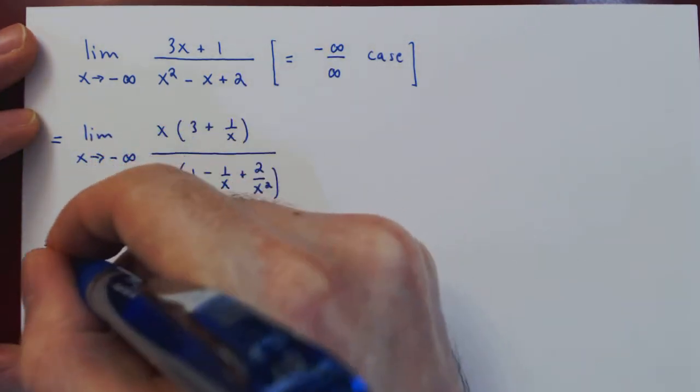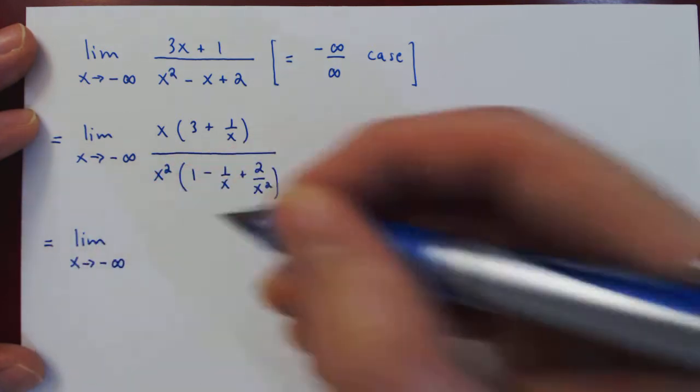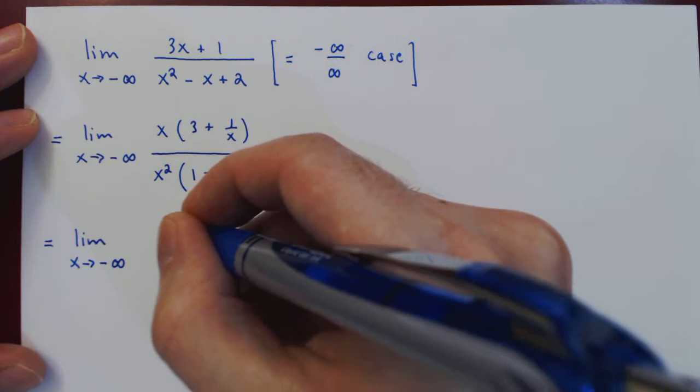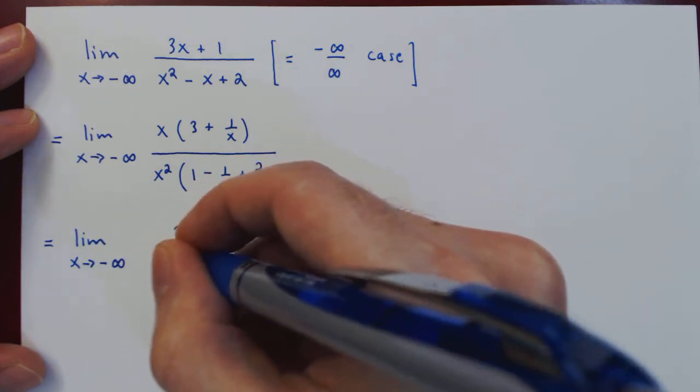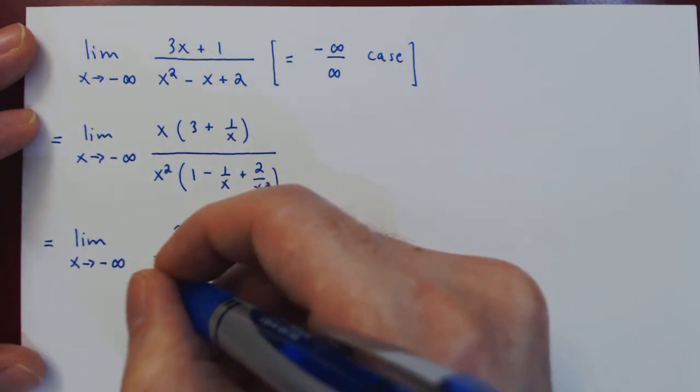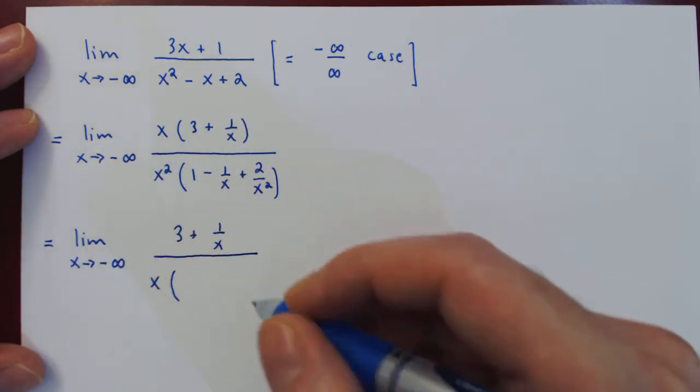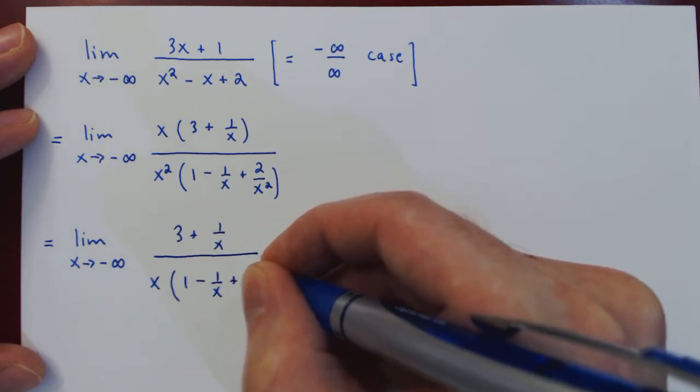We can check our case to see if we've made progress. On the numerator, we have 3 plus 1/x. On the denominator, there is an x that remains, times (1 minus 1/x plus 2/x²).